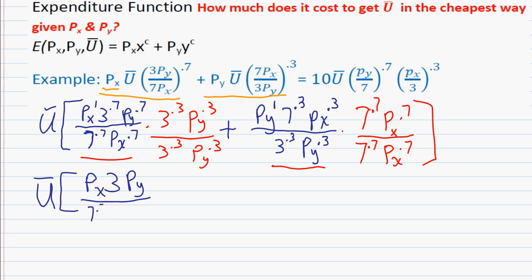And then you get this ugly looking denominator here: 7 to the point 7 px to the point 7 3 to the point 3 py to the point 3. But then the other expression, it's going to have the same common denominator down here. But in the numerator you should end up when you simplify everything up top here, you should end up with py times 7 times px.